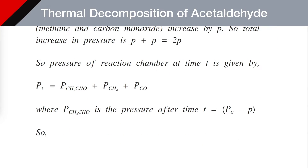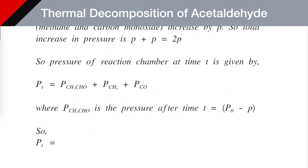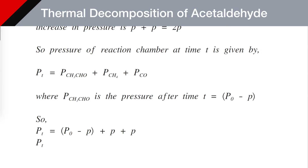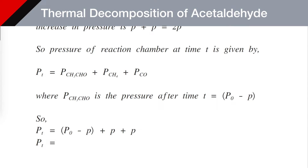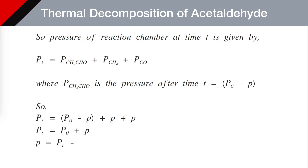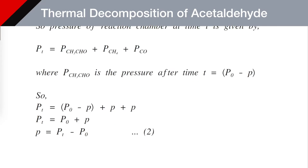Substituting this value into the above equation: Pt becomes (P₀ − p) + p + p. The p terms partially cancel, giving Pt = P₀ + p, or small p = Pt − P₀. This is equation number 2.